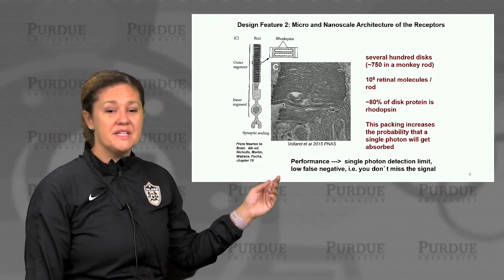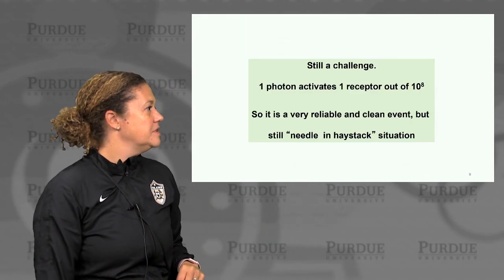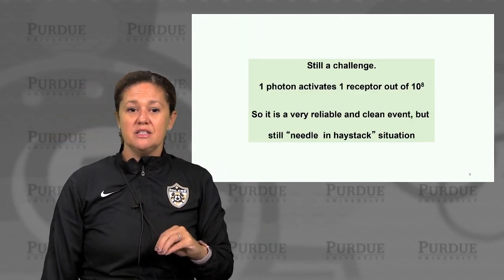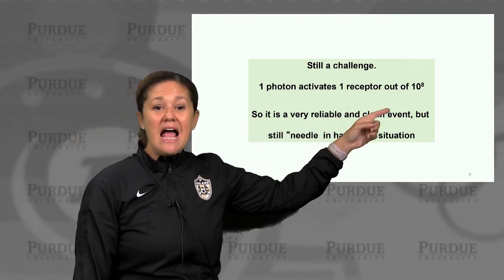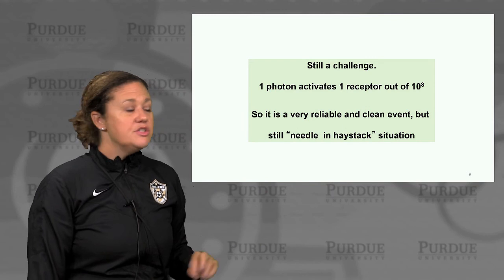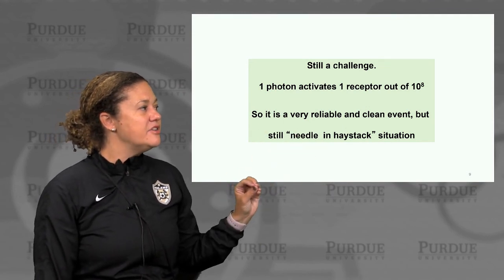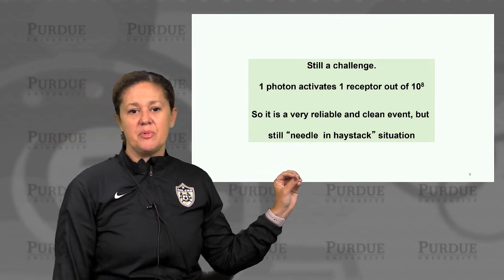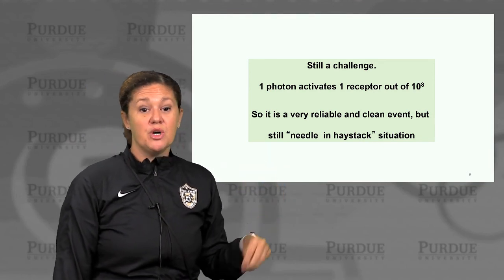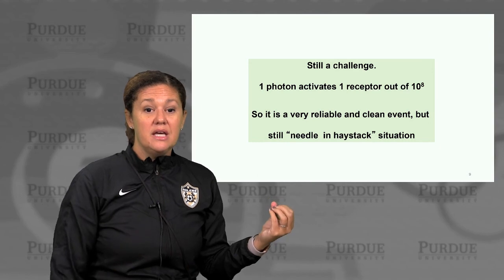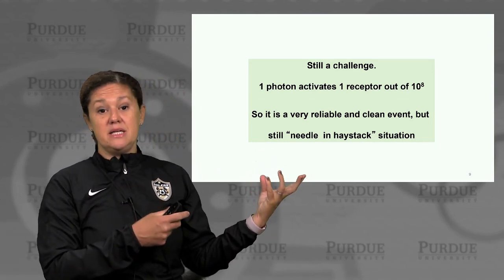This results in low false negatives — in other words, you don't miss the signal. We still have a challenge though: if one photon activates one receptor out of 100 million, it's a very reliable and clean event, but we still have a needle-in-a-haystack problem. Somehow we have to translate that one photon absorbed by this one molecule into something that the brain recognizes as something to pay attention to.